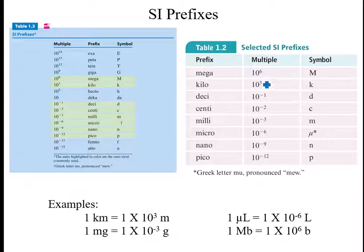These are the prefixes that go with those base units. The way you read this table is that one kilo—I'll use the base unit meter—one kilometer is one times ten to the third. Here's the multiplier right here. So it's one times ten to the third meters.